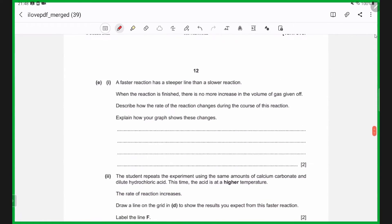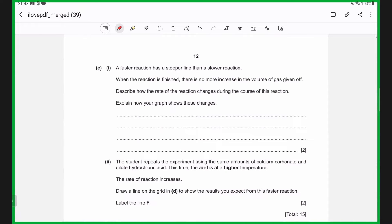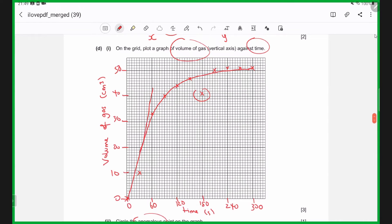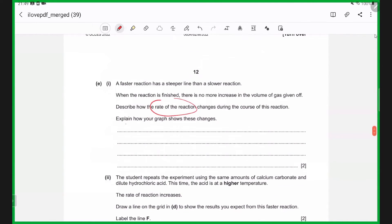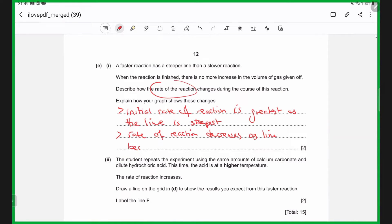And notice how the next part is about how the rate of reaction changes throughout the course of the reaction. We can see that initial rate of reaction is greatest as the line is steepest at the beginning. You see how it's really steep, and then the slope gets less steep, meaning that the rate of reaction gradually decreases. We can start by talking about how the initial rate of reaction is greatest as the line is steepest. The rate of reaction decreases throughout the course of the reaction, as the line becomes less steep.